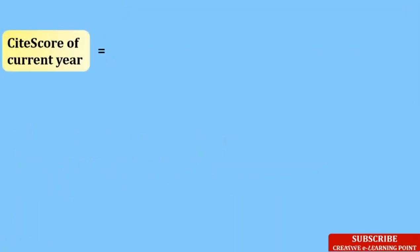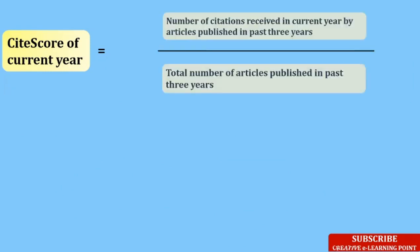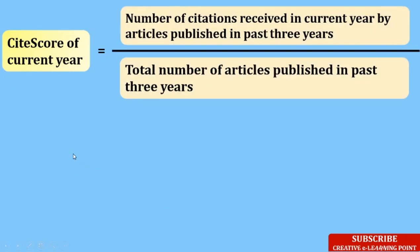Next, let's see how to calculate the cite score. The only difference between impact factor and cite score is that the impact factor is calculated using data from the past two years, while the cite score is calculated using data from the past three years, as you can see in this formula.